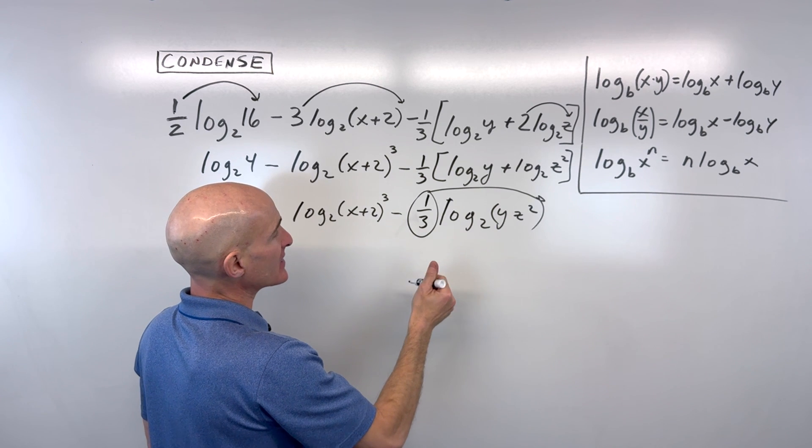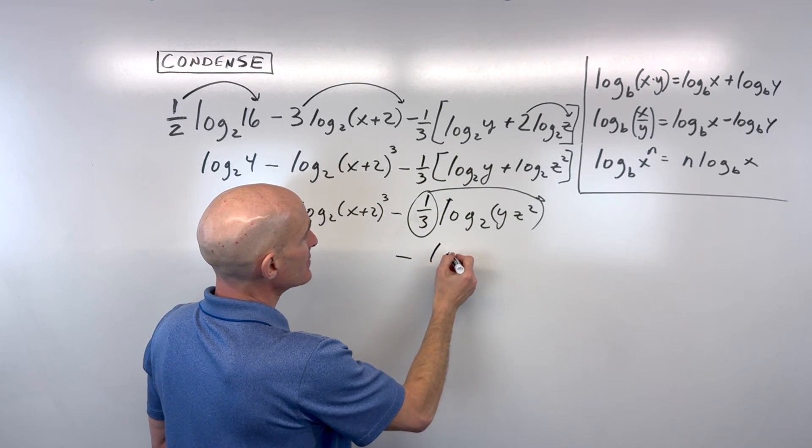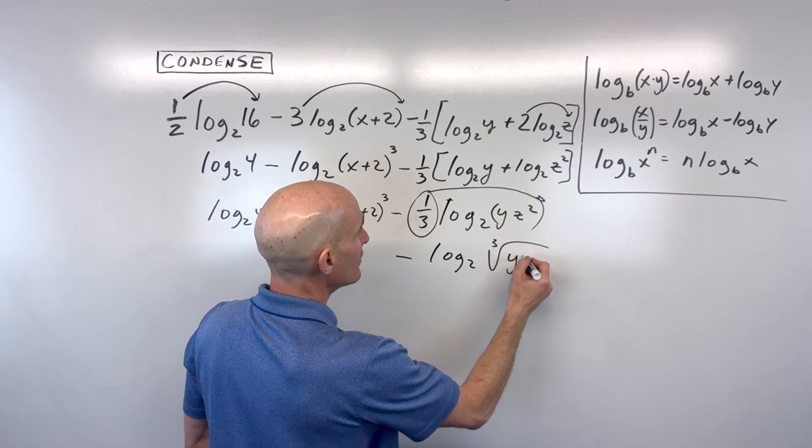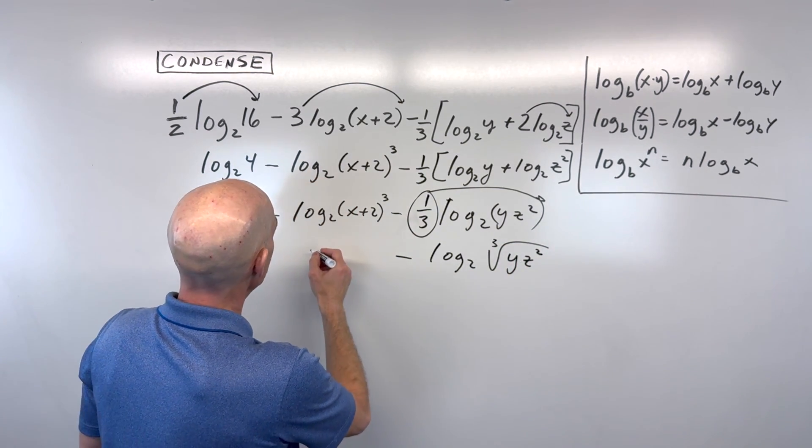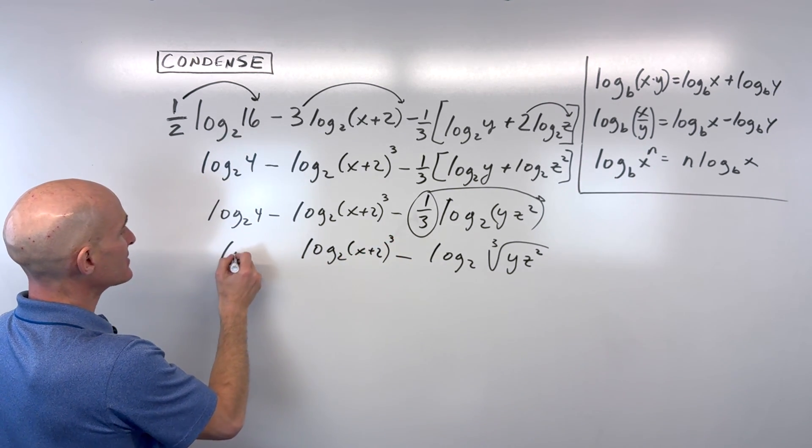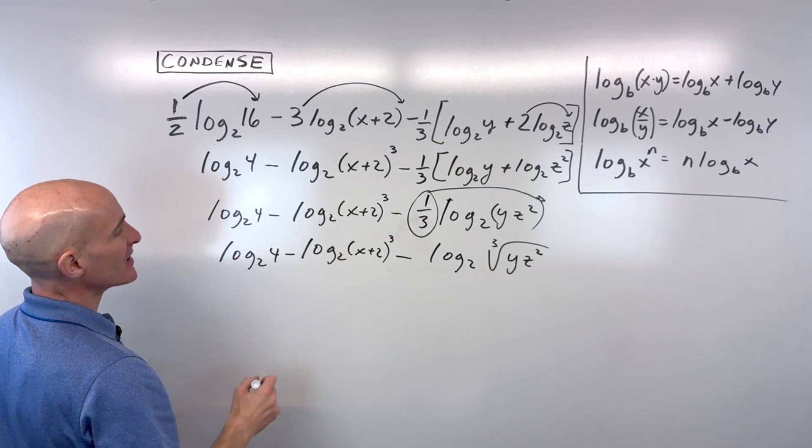Remember, the denominator is like the index. So this would really be minus log base 2 of the cube root of y z squared. And then over here, these two guys stay the same. So I'll just bring them down. We're just taking our time here, just making sure we don't make any mistakes.